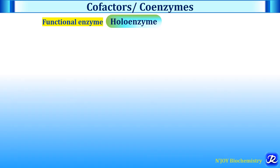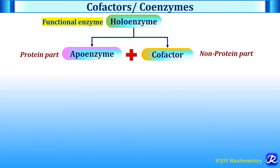The functional enzyme is called as holoenzyme, and holoenzyme is made up of apoenzyme, which is the protein part of the enzyme, and cofactor, which is the non-protein part of the enzyme. Together, apoenzyme plus cofactor is called as holoenzyme.